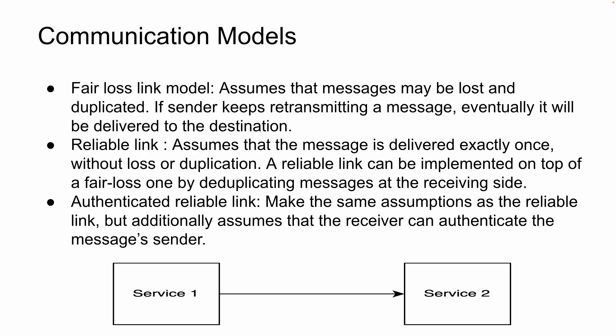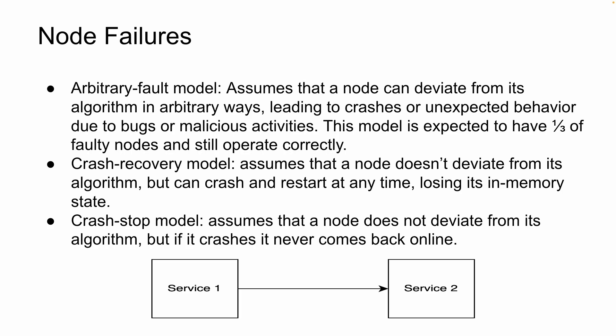So a reliable link means that 100% of the time the message will reach the destination without any loss and duplication. The third model is the authenticated reliable link. It makes the same assumptions as the reliable link, but additionally assumes that the receiver can authenticate the message sender — service two will have a way to verify that the message is coming from service one.